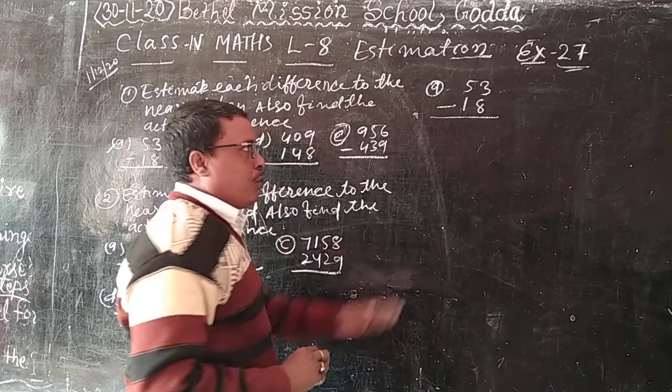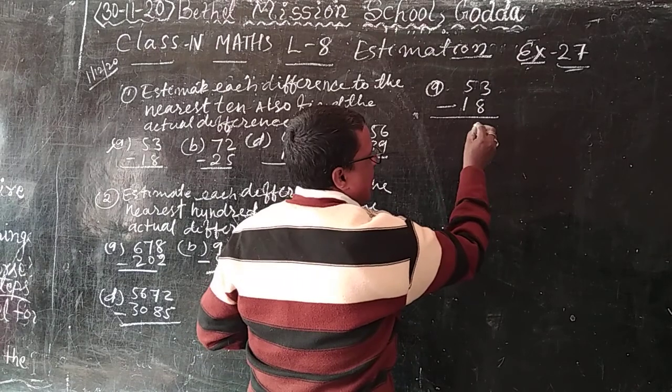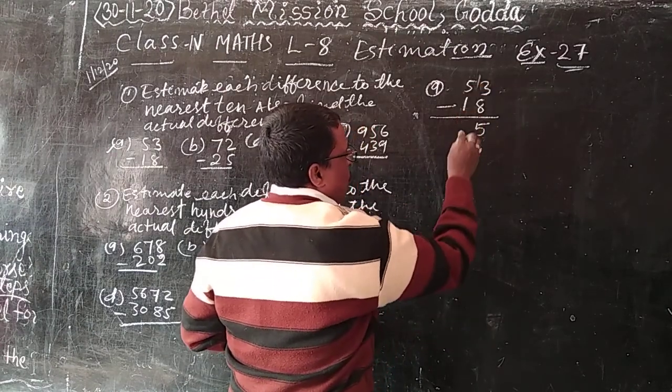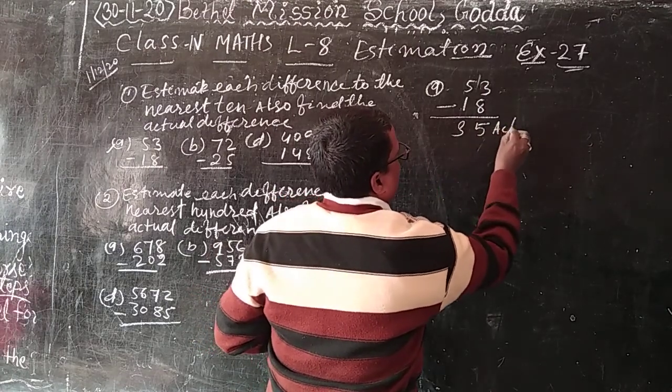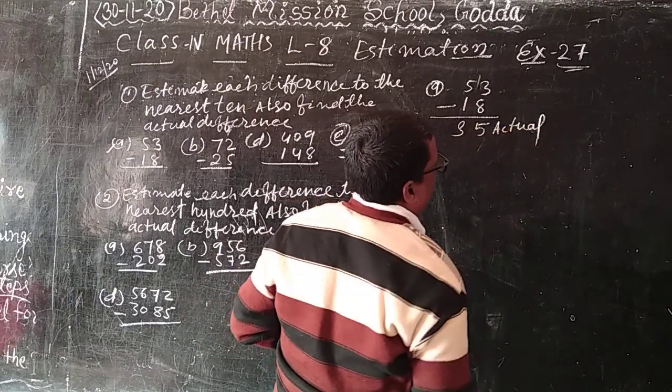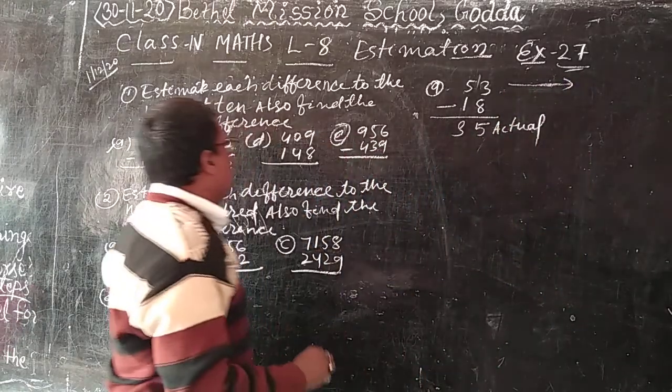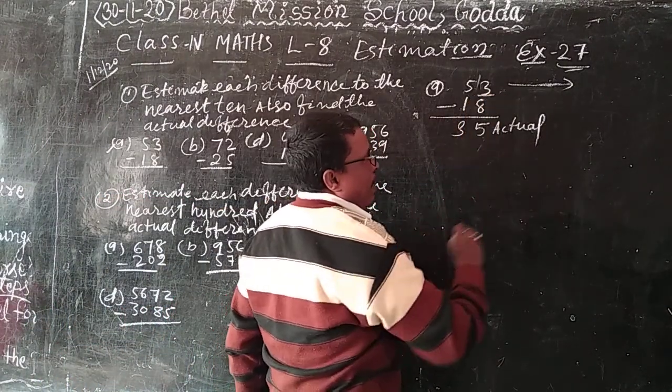So this is actual difference. 13 minus 8, how much? 5, and 4 minus 1, 3. This is 35. And estimate like this. What we estimate? The nearest 10. So 3 is less than 5.